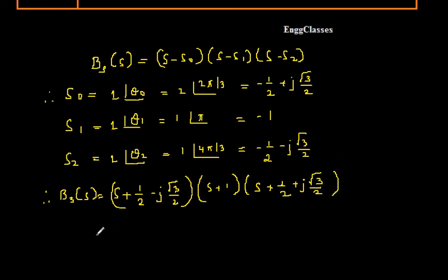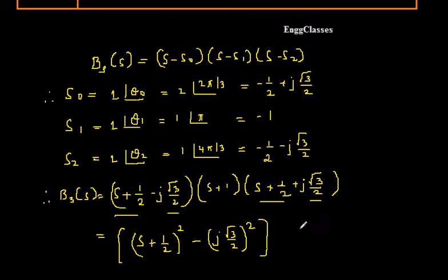I need to simplify this further. S plus 1 looks like a constant term, I will put it out. I will consider this and this. It looks like a plus b and a minus b, which is equal to a square minus b square. Therefore I will consider a square, which is S plus 1 by 2 square, minus b square. In place of b we have j root 3 by 2 square. This gets multiplied with the term S plus 1.